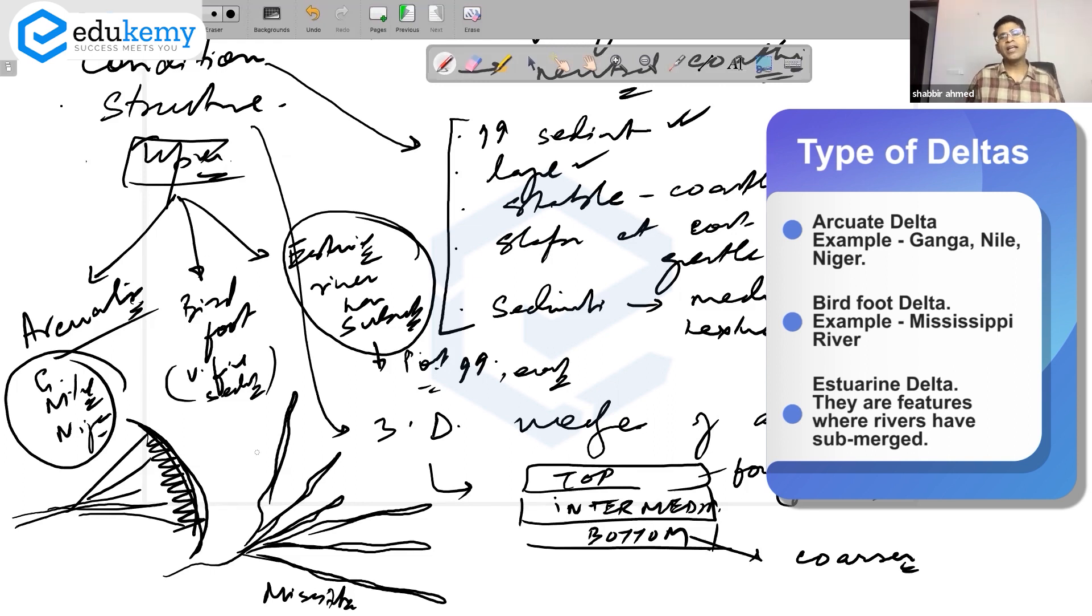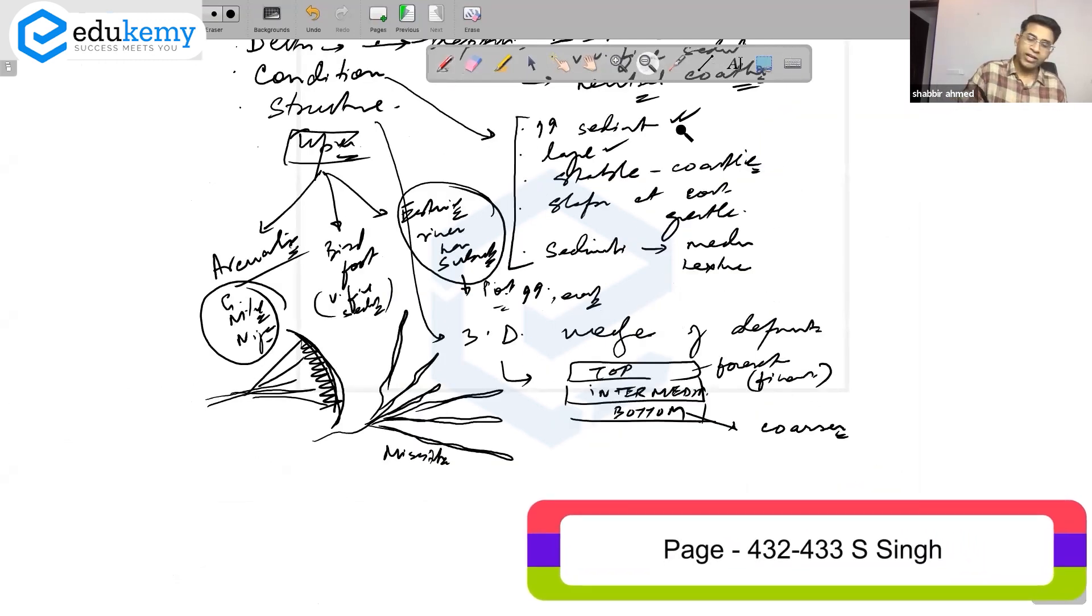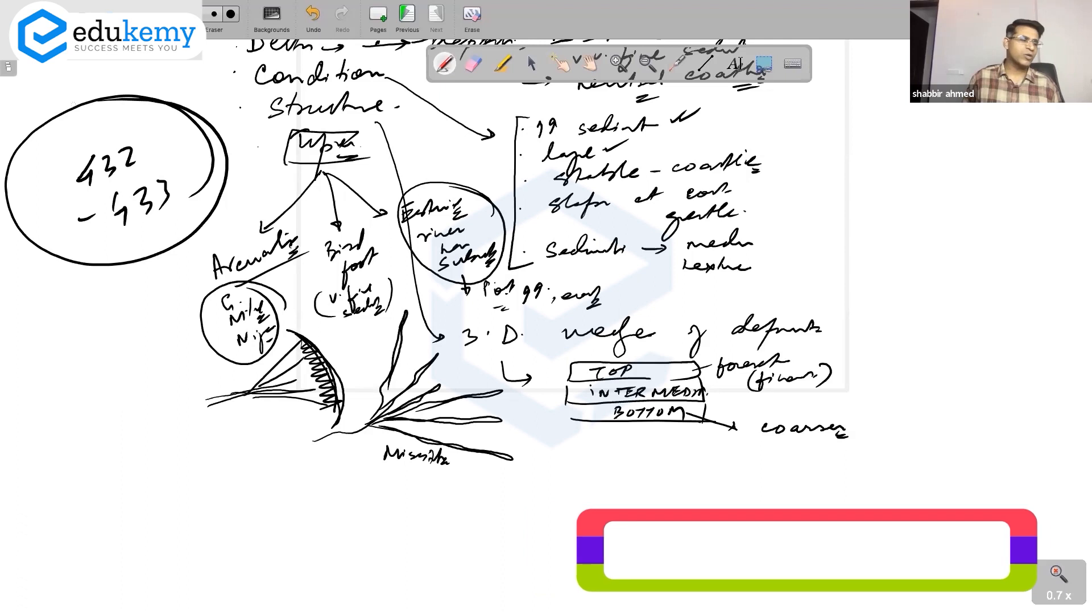Estuarine deltas: the river course has submerged due to rise of sea level. You can check page number 432 and 433. Sundarbans is also arcuate, not typically a finger delta. Almost all books mention Mississippi as finger delta.